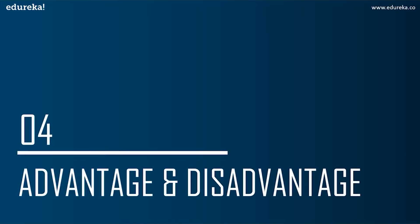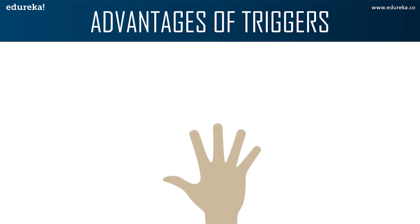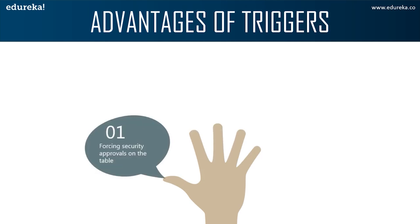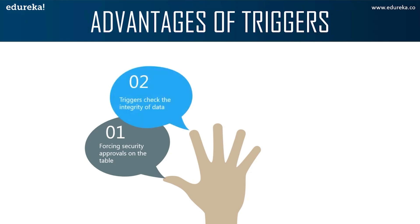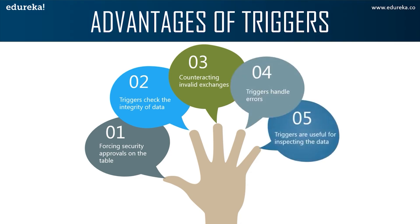Let's move to the next topic — advantages and disadvantages. The advantages of a trigger are: first, forcing security approvals on tables present in the database; second, triggers provide another way to check the integrity of the data; third, triggers counter-react invalid transactions; fourth, triggers handle errors from the database layer; and finally, triggers can be useful for inspecting data changes in the table.